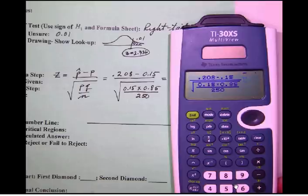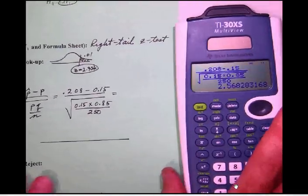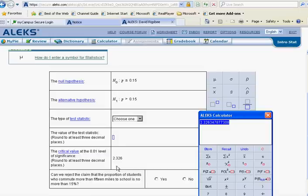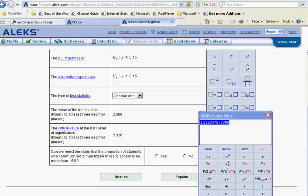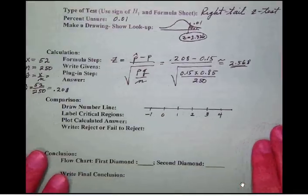Let's get our ALEKS calculator or our TI-30 busy on this problem. One very nice thing about the TI-30XS as well as the ALEKS calculator is that what you see is what you get. You simply enter the problem exactly as it appears on paper into the calculator, and by hitting enter it'll crank that answer all in one step. We see here that our calculated value, our test statistic, is 2.568.